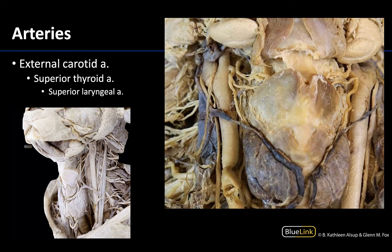Let's get started with what is typically the first branch of the external carotid — you will see it branching off right here — and this is going to be the superior thyroid. You can see it branching close to where the common carotid artery bifurcates into the internal carotid and the external carotid. I know this is external carotid mainly because I see a branch coming off of it, and of course the internal carotid artery does not give off any branches in the neck.